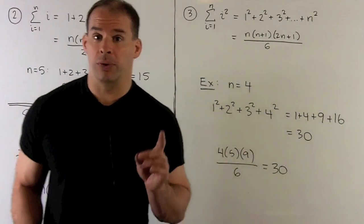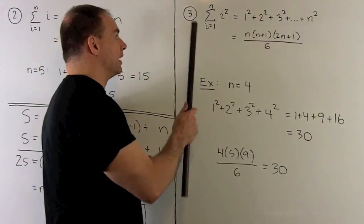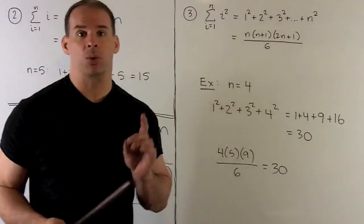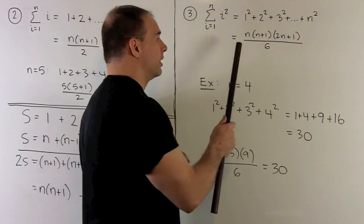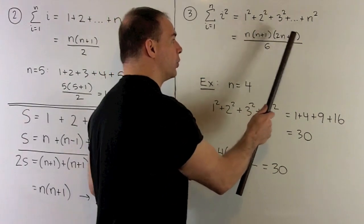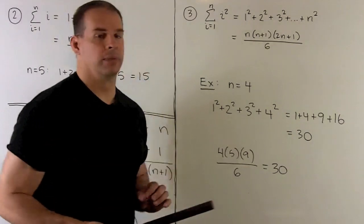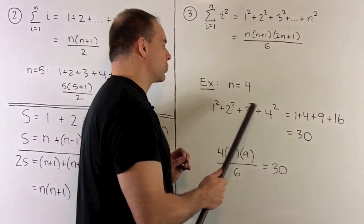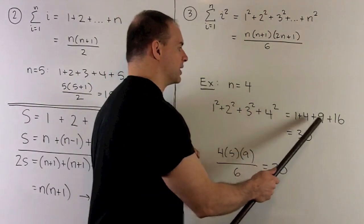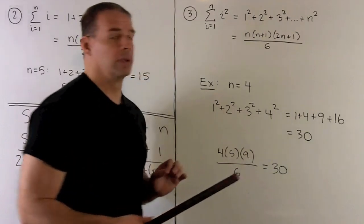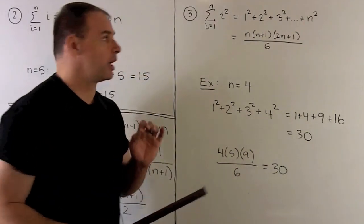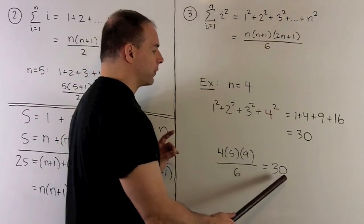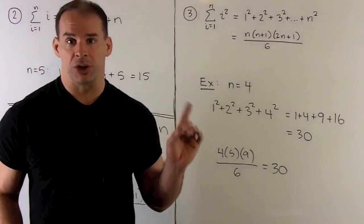Formula 3: the sum as i goes from 1 to n of i squared equals 1 squared plus 2 squared plus 3 squared up through n squared. The formula is n times n plus 1 times 2n plus 1, divided by 6. Let's check when n equals 4: 1 plus 4 plus 9 plus 16 gives 30. Using the formula, 4 times 5 times 9 over 6 also gives 30. So the formula checks out in that special case.